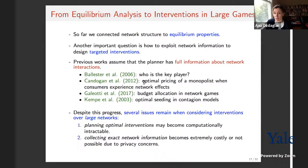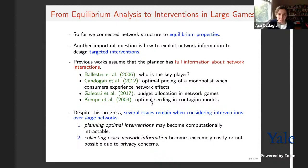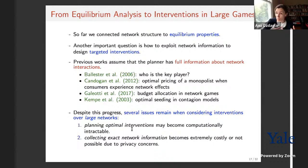These papers assume full information about network interactions. With large networks, two issues arise. First, the optimization problems involved in intervention design are very large-scale and scale with the size of the network — going beyond a few hundred nodes makes them computationally difficult to solve. Second, collecting exact network linkage information is either costly or not possible due to privacy concerns, so assuming full network information may not be a good approximation.